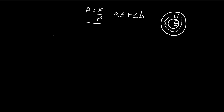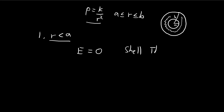We're told to find the electric field. First, let's consider the electric field when r is smaller than a. We can use Shell's theorem to argue about this. The electric field is always equal to 0, because we essentially have a giant shell, and due to Shell's theorem, the electric field inside is always going to be 0. So there we have it for r smaller than a.